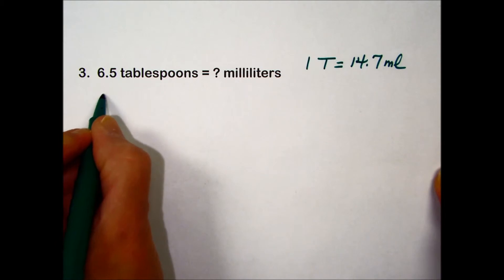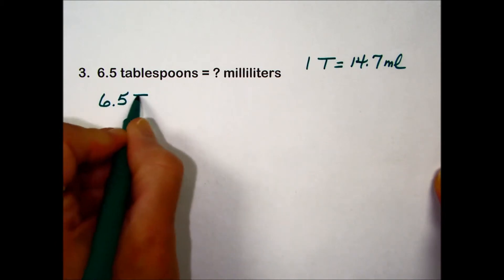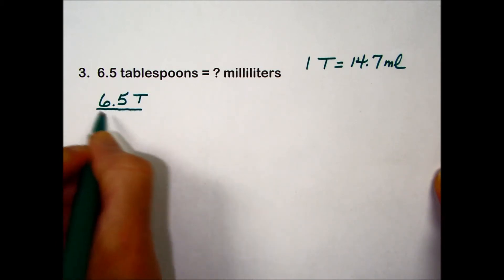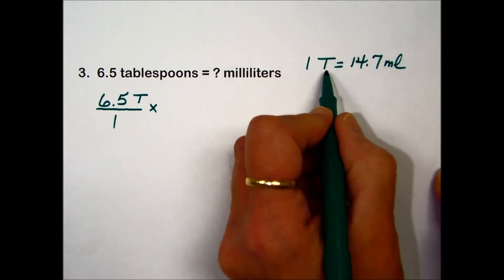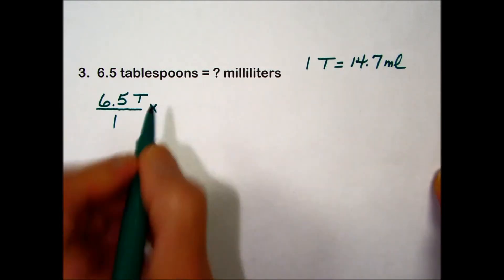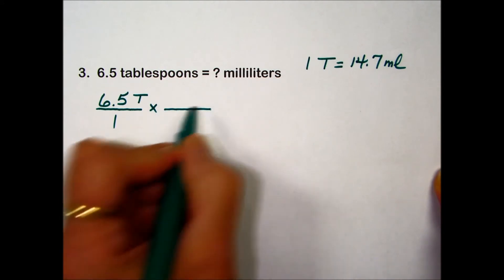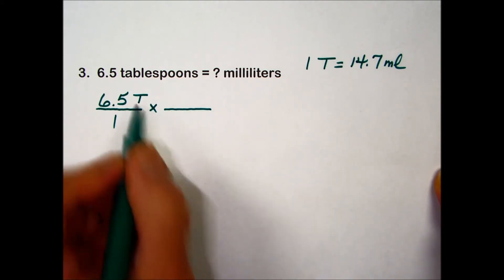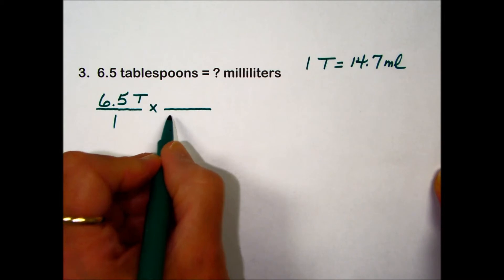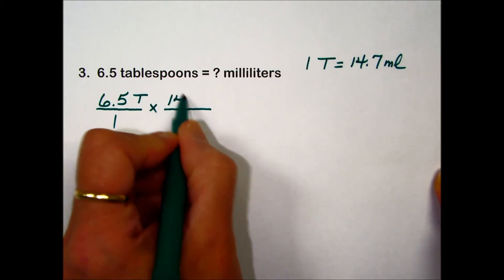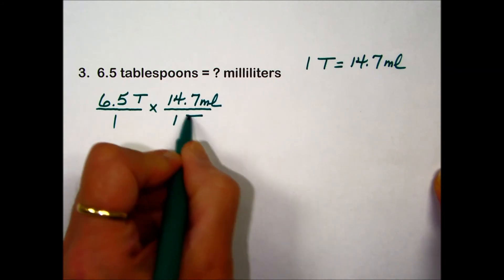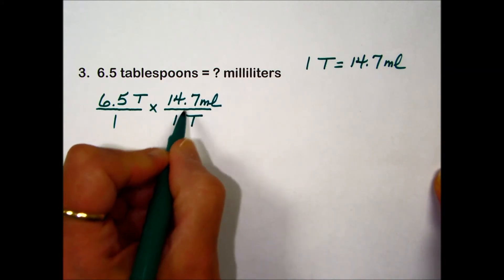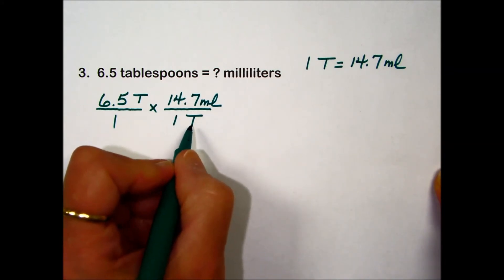Start with what is given, 6.5 tablespoons expressed as a fraction. So we'll put a denominator of 1. Taking our factors that are equal to one another and putting them in a fraction so that the tablespoons cancel out means the arrangement we'll use is 14.7 milliliters over 1 tablespoon.